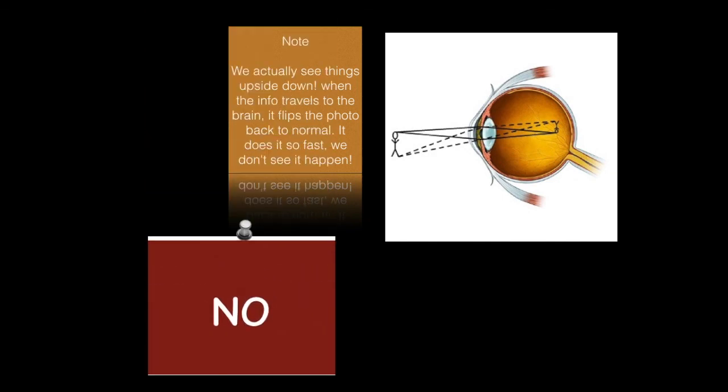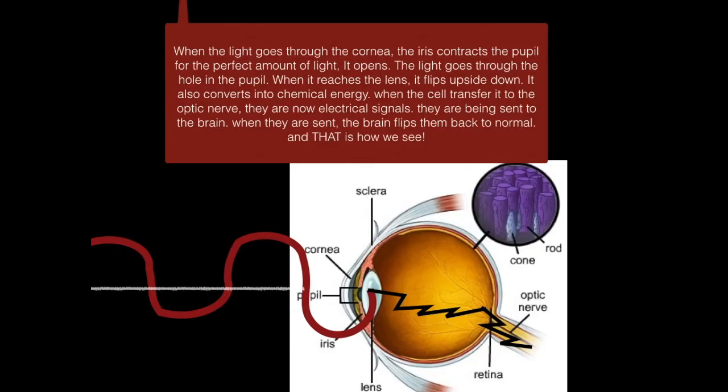Not that kind of eye. When the light goes through the cornea, the iris contracts the pupil for the perfect amount of light. The light goes through the hole in the pupil. When it reaches the lens, it flips upside down.